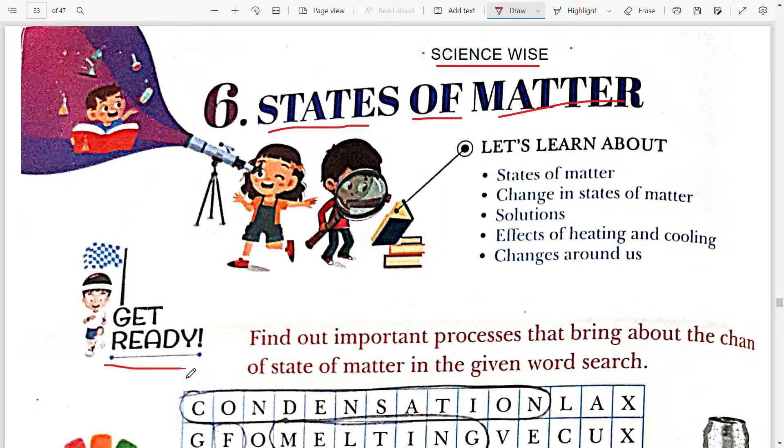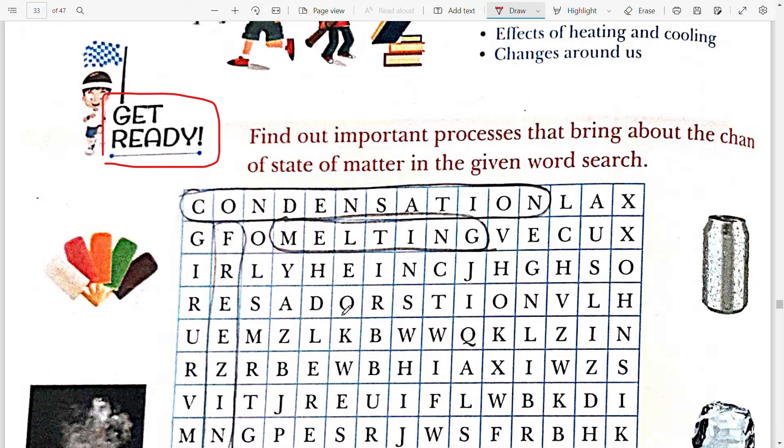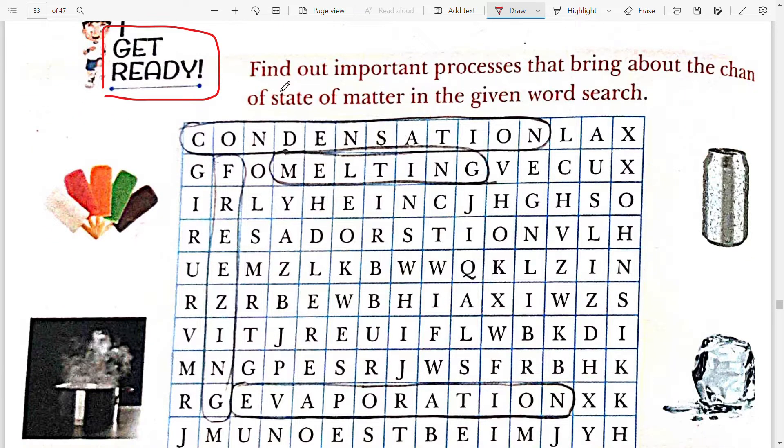The very first exercise is the Get Ready exercise. In this exercise, what we have to do is find out the important processes that bring about the change of the state of matter in the given word search. This is the word search. We have to guess out the processes from this picture and you have to find the process in this word search.